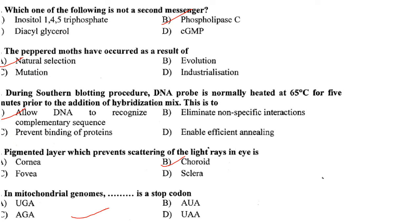During Southern blotting, the DNA probe is normally heated at 65 degrees Celsius for five minutes prior to addition of the hybridization mix. This is to allow the DNA to recognize complementary sequences so that the probe can bind to the target sequence.